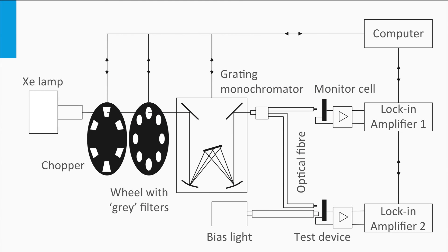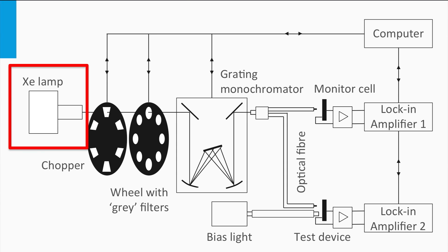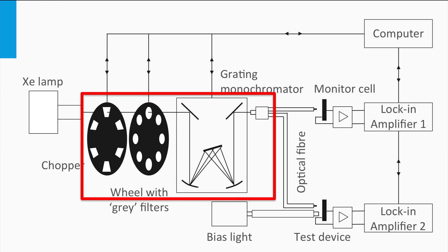EQE spectra are measured using an EQE setup, also called spectral response measurement. Such a setup needs a wavelength-selective light source, a calibrated light detector, and a current meter. A xenon lamp is a standard light source used in EQE setups, as it emits photons in the same spectral range of interest of the solar spectrum. Using filters and a monochromator, only light with a narrow band of photon energies is incident on the solar cell.